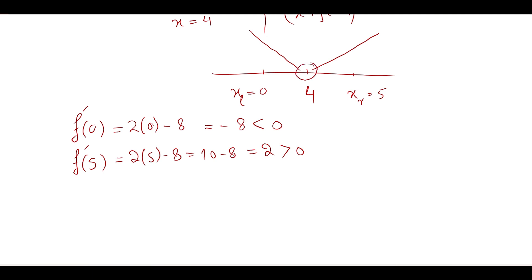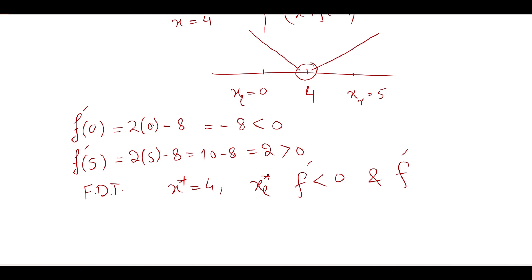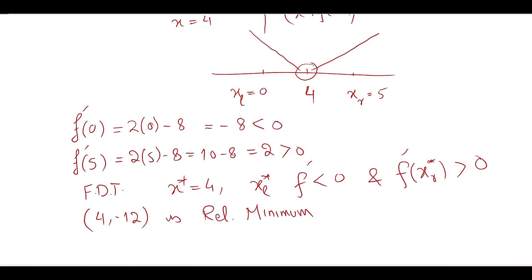By the first derivative test, if to the left of the critical point f prime is less than zero, and to the right f prime is greater than zero, then the critical point is a relative minimum.